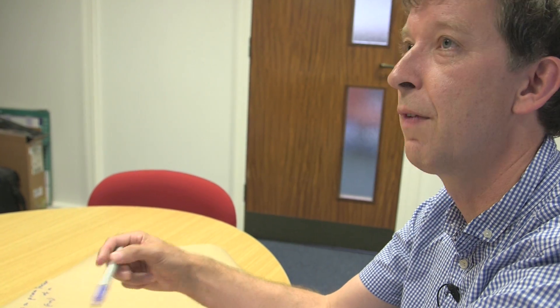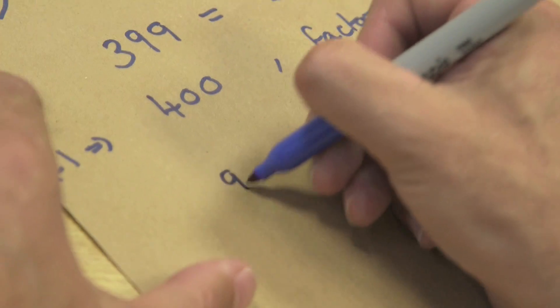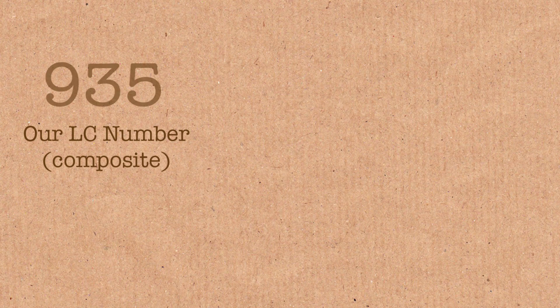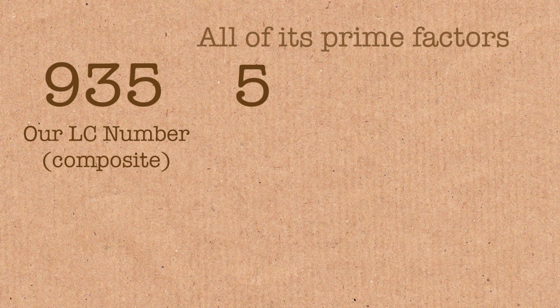The key thing, the neat thing, is that I've added 1 to the number, and it turns out that all the original prime factors, if I just add 1 to them, are also factors of my new number. That's one example. Let's do another one — 935, for example.